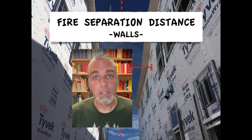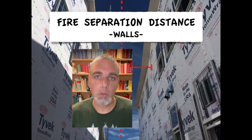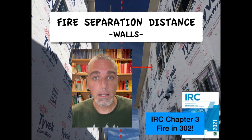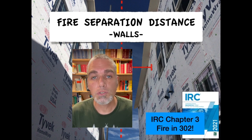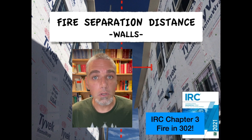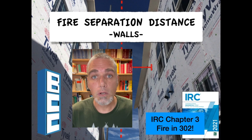Fire separation distance is how the IRC addresses fire spreading between homes. Learn about how this can affect wall construction in this clip from my on-demand course, IRC Chapter 3, Fire in 302, available only at buildingcodecollege.com.